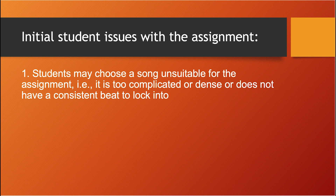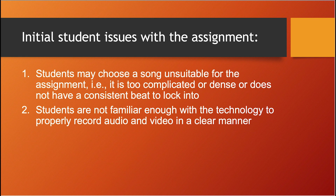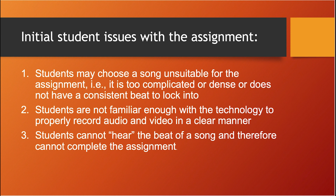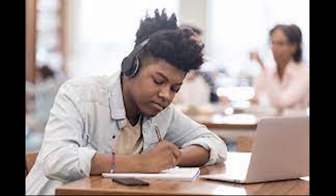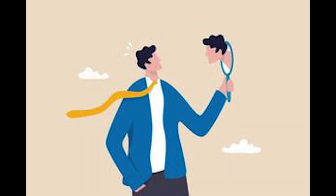The issues that arise are: one, students may choose a song unsuitable for the assignment — too complicated, dense, or lacking a consistent beat; two, students are not familiar enough with the technology to properly record audio and video; and three, students cannot hear the beat of a song and therefore cannot complete the assignment. These are symptomatic issues, however. It is apparent there are issues with the engagement of music even when students are making their own musical choices. The choices students make reveal a lack of self-awareness and subconscious programming that controls the emotional response when confronted with listening deeply to music.